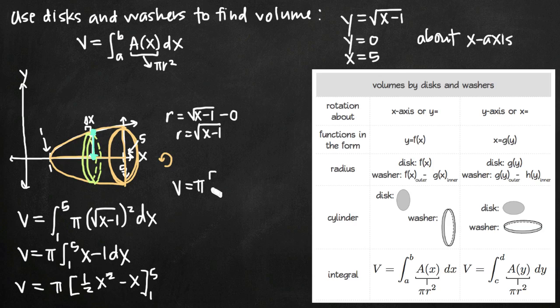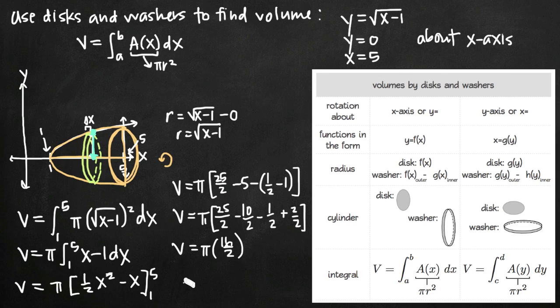So we'll get volume equals pi times, when we plug in 5, 5 squared gives us 25, so we'll get 25 halves minus 5 minus whatever we get when we plug in our lower limit of integration, so minus 1 half minus 1. And now it's just a matter of arithmetic. We'll find a least common denominator of 2, so we'll get pi times 25 halves minus 10 halves minus 1 half plus 2 over 2, and we get 25 minus 10 is 15 minus 1 is 14 plus 2, so pi times 16 halves, which is 8 of course, so volume is equal to 8 pi.